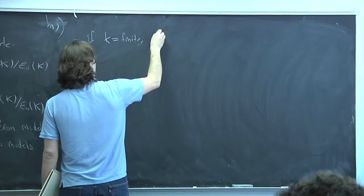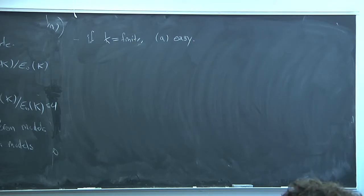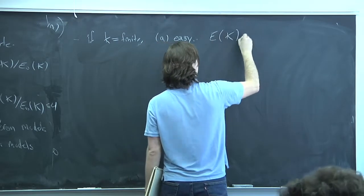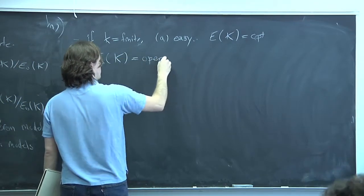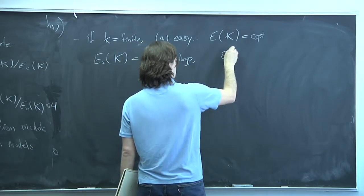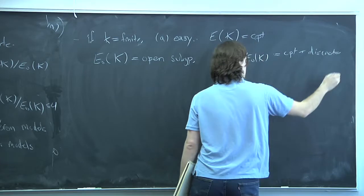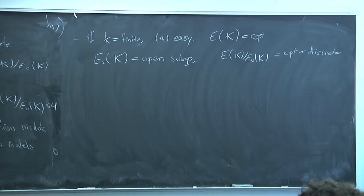If the residue field is finite, this quotient is obviously finite because K is locally compact — like a finite extension of Q_p. In that case, E(K) is compact under the strong topology, and E₀(K) is easily seen to be an open subgroup. So the quotient is both compact and discrete, hence finite. But it's also important to know this holds when passing to the full unramified extension of Q_p, where the compactness argument doesn't work.